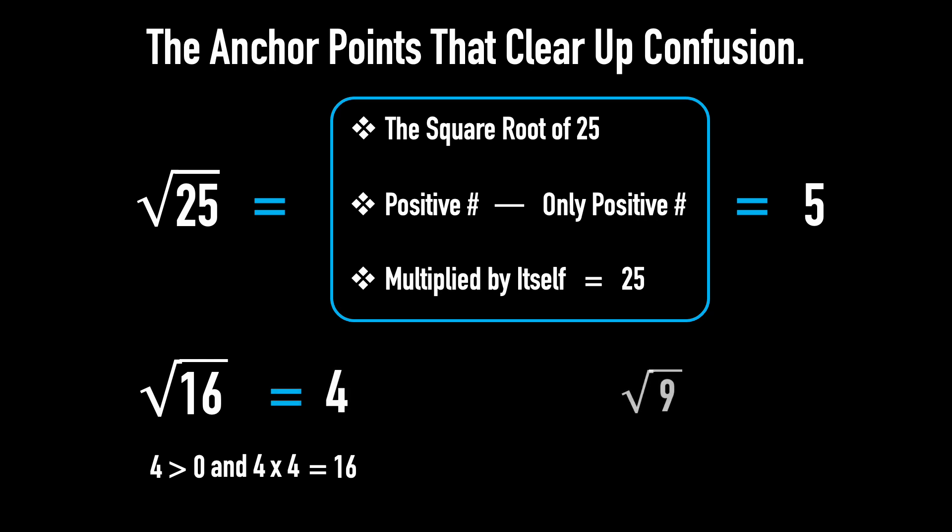Second, find the square root of 9. Because 3 is positive and 3 multiplied by itself gives 9, the square root of 9 is 3.